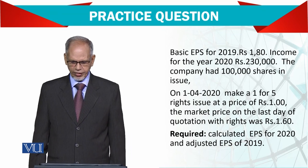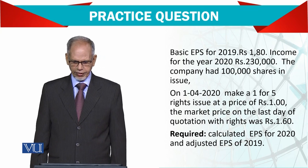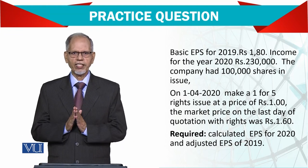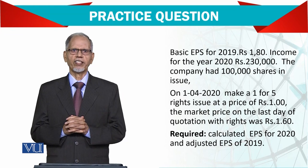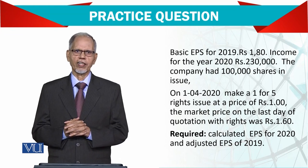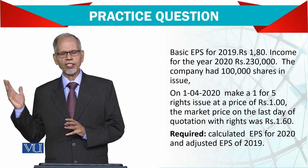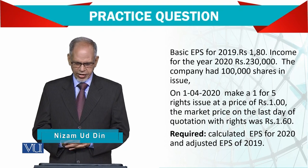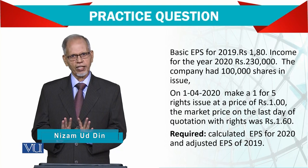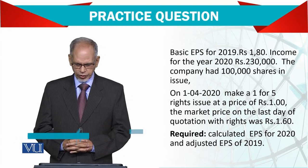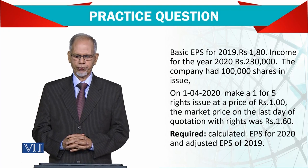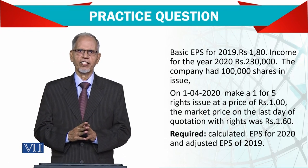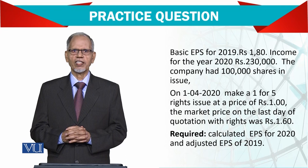Basic earnings for 2019 is 1.8 per share. Income for the year 2020 is 230,000. The last year's earnings need to be adjusted for the rights issue. The company had 100,000 shares in issue. On 1st July 2020, it makes a 1-for-5 rights issue — for every 5 ordinary shares, shareholders receive 1 rights share. This rights issue is a preemptive right.